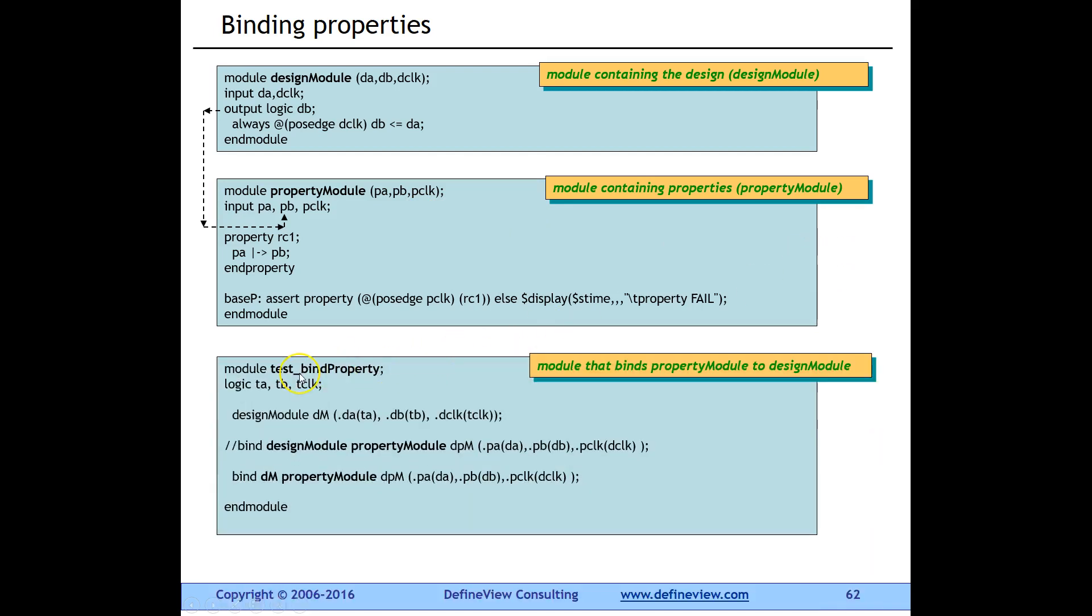So this is where you do a bind. For example, you have a module called test bind property and in this module you instantiate the design module DM and connect the design ports with the test bench. Now here is the keyword bind, which is a keyword from the SVA language. You can bind the design module with the property module, give it an instance name, and connect just like you would normally connect Verilog modules. So PA connects to DA, PB connects to DB, and P clock connects to D clock.